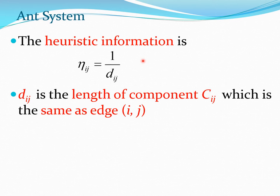The heuristic information is given by 1/d_ij, where d_ij is the length of component c_ij, which is the same as edge ij.